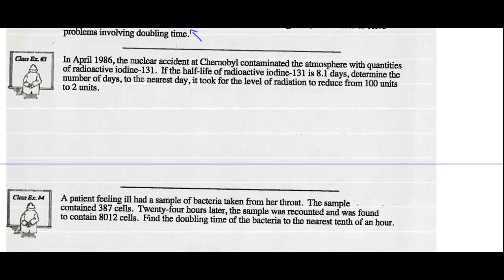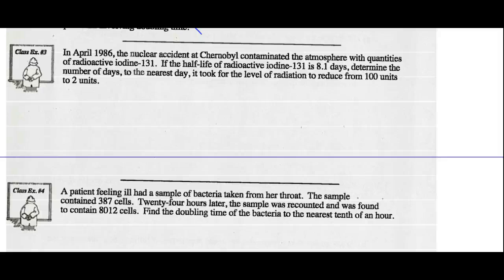Example 3: In April 1986, the nuclear accident at Chernobyl contaminated the atmosphere with quantities of radioactive iodine-131. If the half-life of the iodine is 8.1 days, determine the number of days it took the level of radiation to reduce from 100 units to 2 units. If you look at the formula, amount final is 2 units, amount initial is 100 units, we're talking about half-life. We don't know how long it took, but the half-life is 8.1 days.